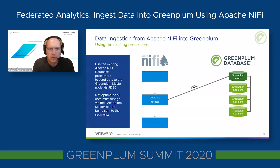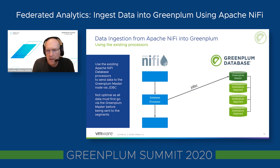There are a few ways of doing it. The most straightforward way right now is to use the database family of processors available in Apache NiFi. The only option with a database processor is to use a JDBC connection to send data to the Greenplum master, which then redistributes the data across Greenplum segments. While possible, this is not the most optimal solution because it requires all the data to travel through a single Greenplum master, which limits the scalability of this solution.